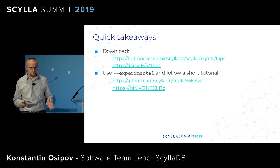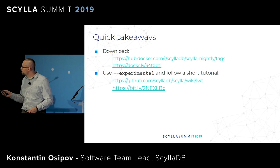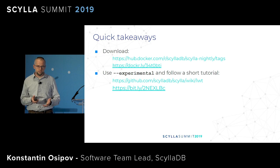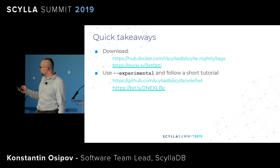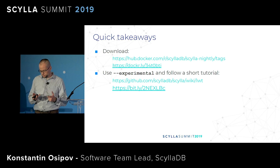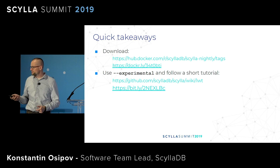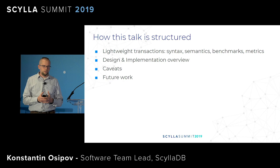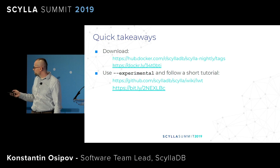Many of you obviously want to get lightweight transactions in Scylla and the most burning questions are: are they there, are they ready, how can I get them? So I prepared this slide with quick takeaways: the support for lightweight transactions was committed to master, Docker containers will soon be available, and there is a quick tutorial I put up which you can play with. If you know what lightweight transactions are and how to use them, you could probably have a coffee instead of listening. For those who'd like to know the details of implementation, benchmarks, metrics, and future work — for example, we still have an experimental switch on them, and why we have it and when we'll remove it — then stay with me.